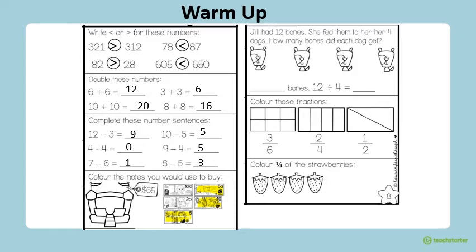Next question. Jill had 12 bones, she fed them to her four dogs. How many bones did each dog get? So I'm going to share my 12 bones between the four dogs. I'm going to make sure that I give one bone to each dog one at a time. So each dog got 3 bones. So 12 divided by 4 equals 3.